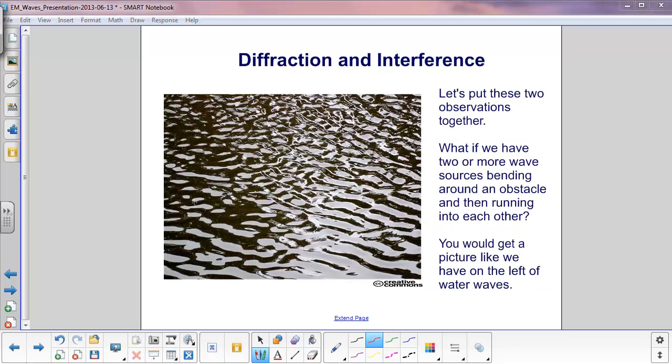Let's put these two observations together. What if we have two or more wave sources bending around an obstacle and then running into each other? Well you would get a picture like this that we have here on the left with water waves. You have different patterns of water waves coming from different points interfering with each other and creating this different pattern of waves.